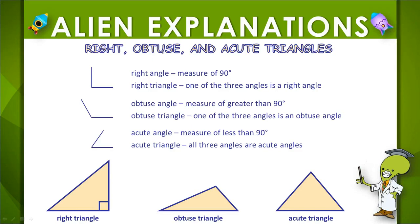When we classify triangles by an angle measure, they can be right, obtuse, or acute.